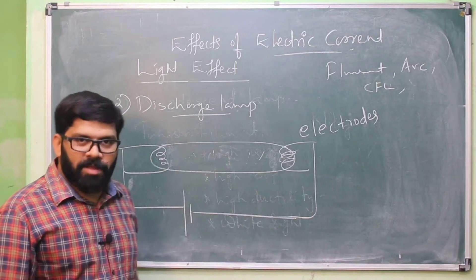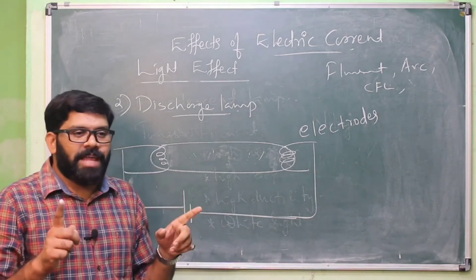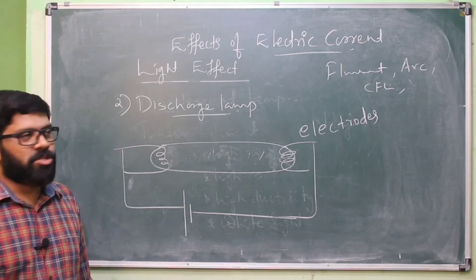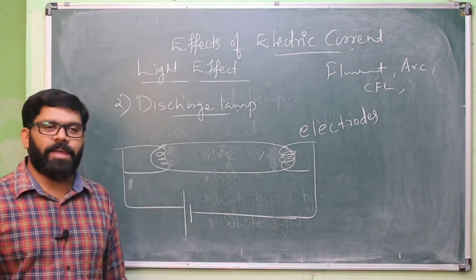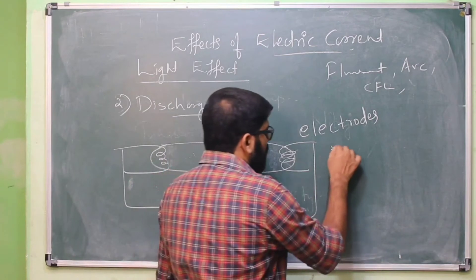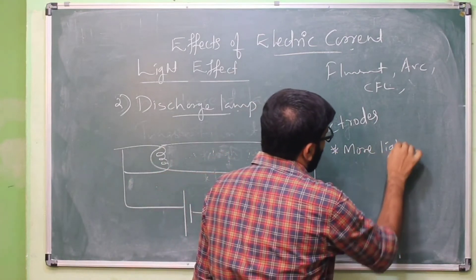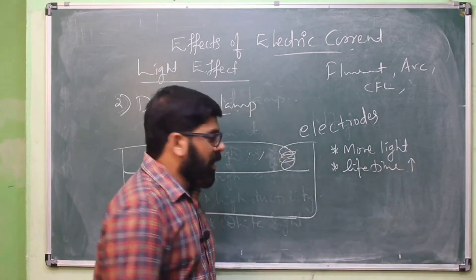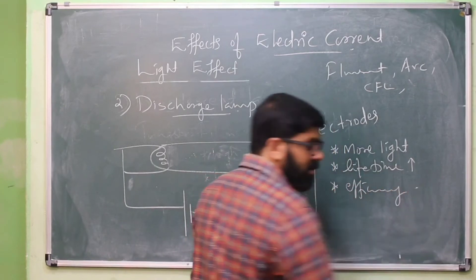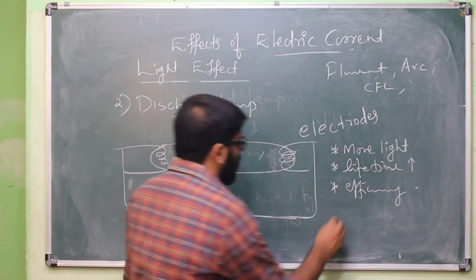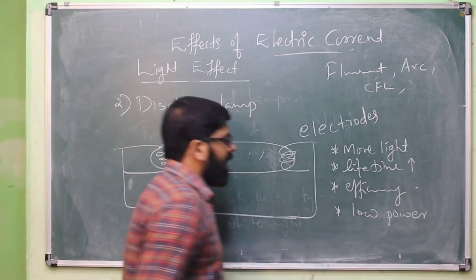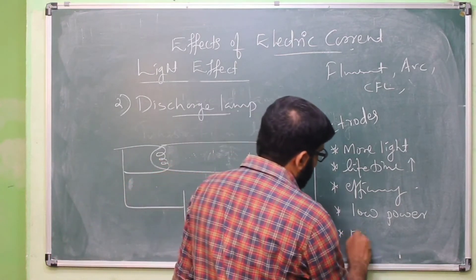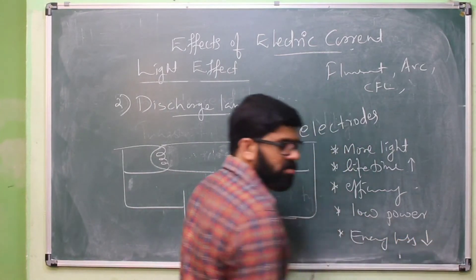The advantages of a discharge lamp over an incandescent lamp are: it gives more light, it has a longer lifetime and higher efficiency, and there is less energy loss.